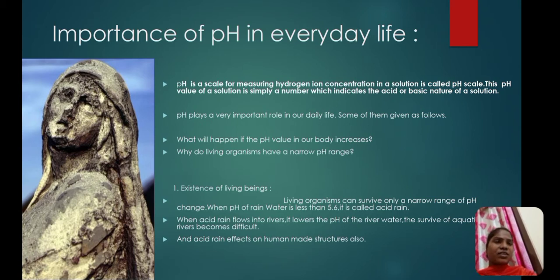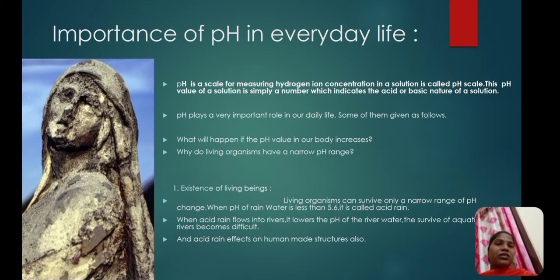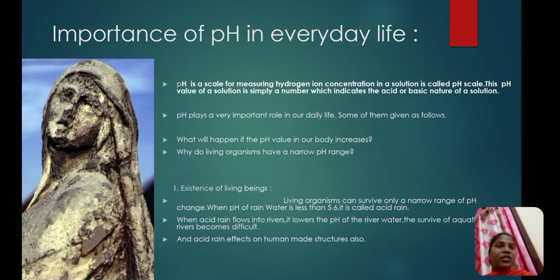Why do living organisms have a narrow pH range? To answer these questions, we have to know more about pH value and the pH scale. First, the existence of living beings: living organisms can survive only within a narrow range of pH change. When the pH of rain water is less than 5.6, it is called acid rain.